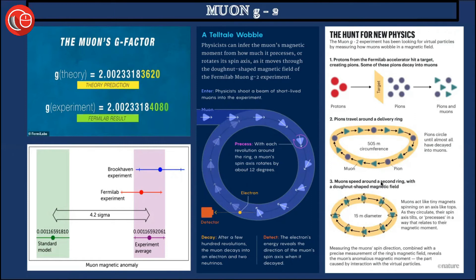The muons speed around a second ring with a donut-shaped magnetic field. Muons act like tiny magnets spinning on an axle like tops as they circulate, and their spin axis tilts or precesses in a way that relates to their magnetic moment. This is essentially what characterizes the muon's behavior in the experiment.